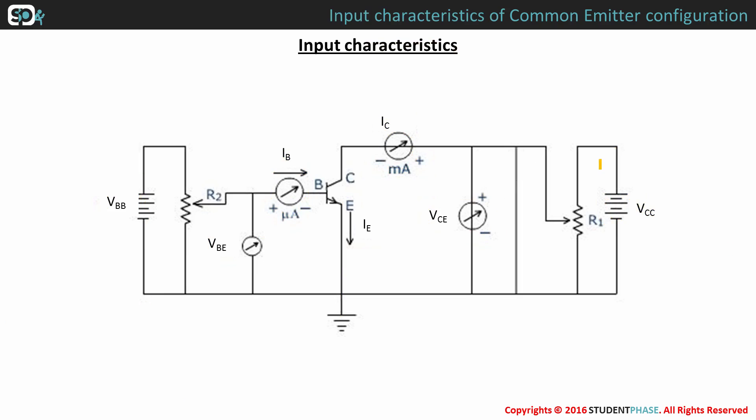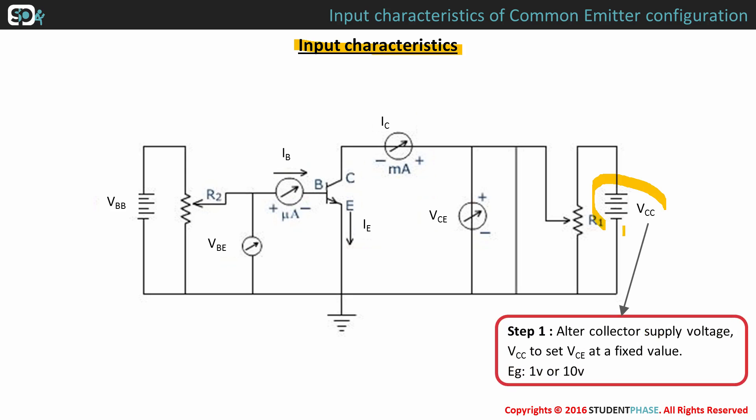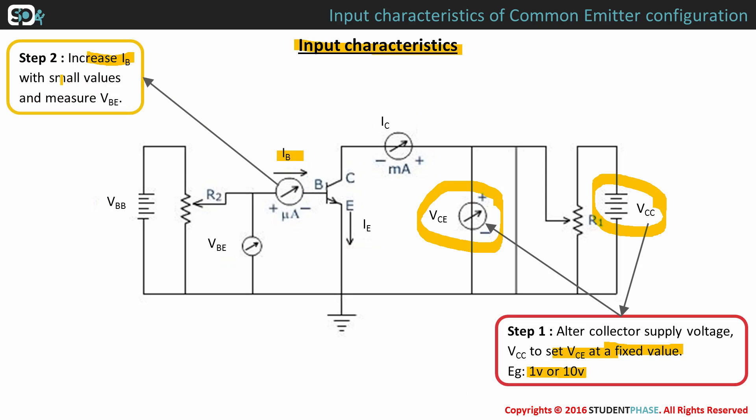Now let's move on to the input characteristics of CE configuration. And to obtain this, there are certain procedures. Alter collector supply voltage VCC to set collector emitter voltage VCE to a fixed value, say 1 volt or 10 volts. Now, increase base current IB in small values, say 5 microamps.